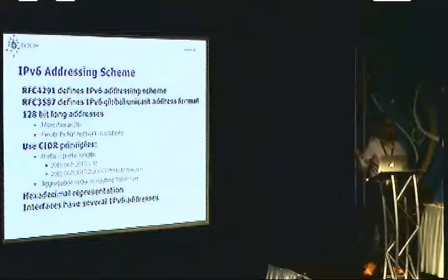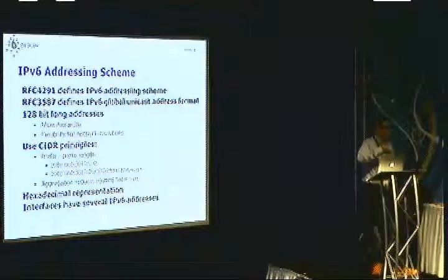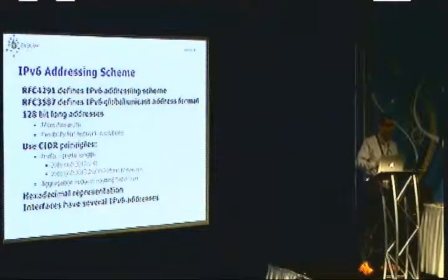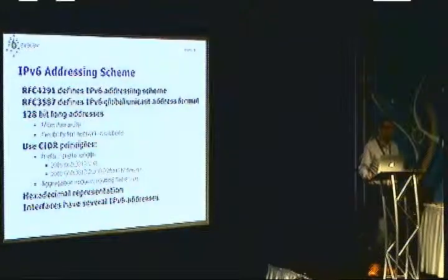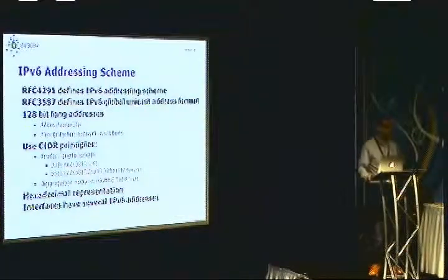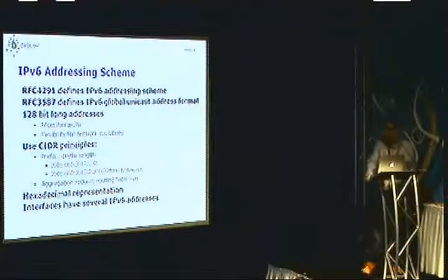Before, we had two notations: an address with CIDR notation like slash-24, or a net mask — a sequence of ones and zeros like 255.255.255.0. But in IPv6, that would be very complex, and CIDR notation is much simpler — it just tells us the number of ones in a mask. Also, IPv6 uses hexadecimal representation, and as mentioned, interfaces may have several IPv6 addresses.